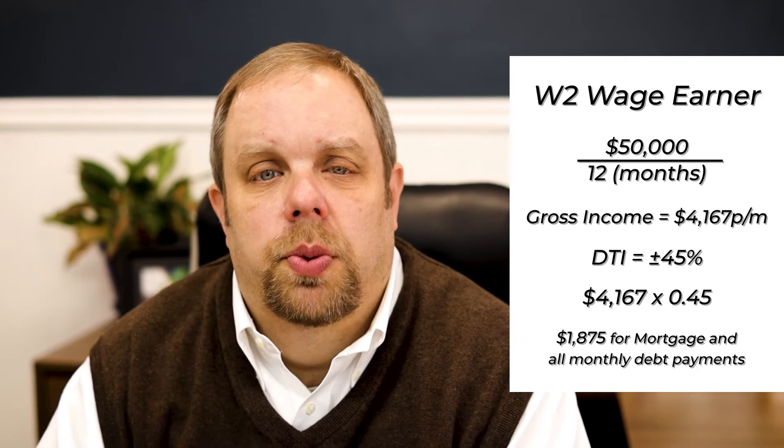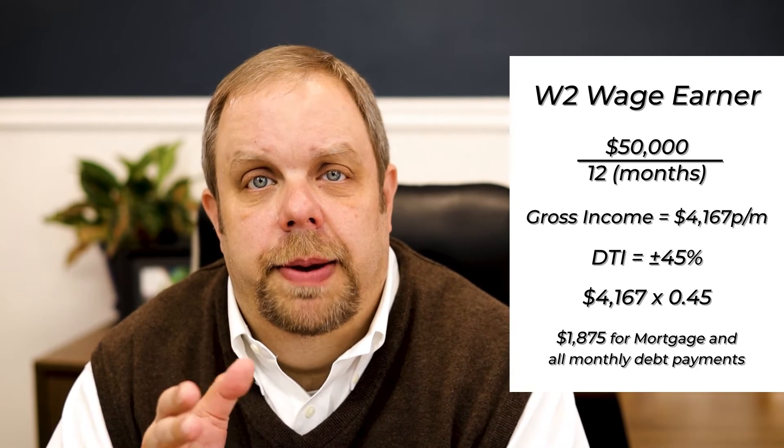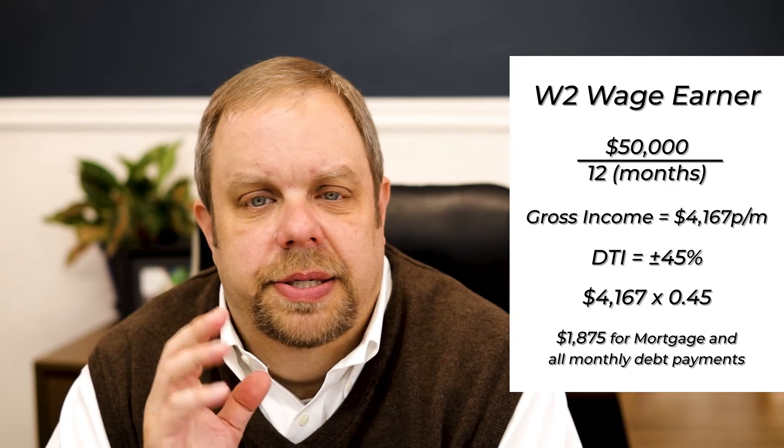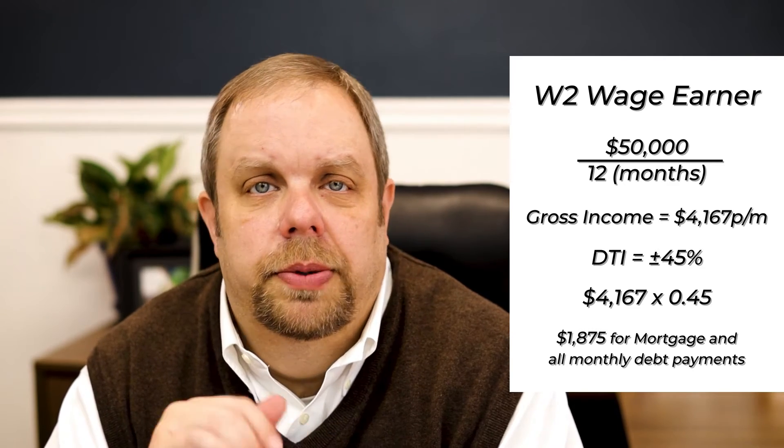$1,875 is what we're allowed to use for your mortgage payment — your house payment, taxes, the whole deal — including any debt that you may have. So if you have debt, let's say a car payment that's $300 a month, now we're down to $1,575. That's the way in which you calculate your debt-to-income ratios.